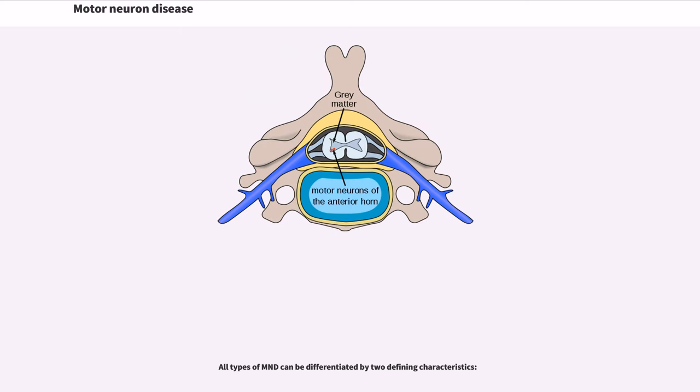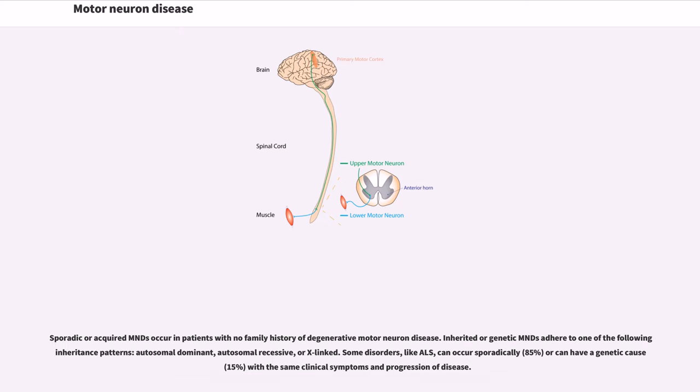All types of MND can be differentiated by two defining characteristics. Sporadic or acquired MNDs occur in patients with no family history of degenerative motor neuron disease. Inherited or genetic MNDs adhere to one of the following inheritance patterns: autosomal dominant, autosomal recessive, or X-linked. Some disorders, like ALS, can occur sporadically 85%, or can have a genetic cause 15%, with the same clinical symptoms and progression of disease.